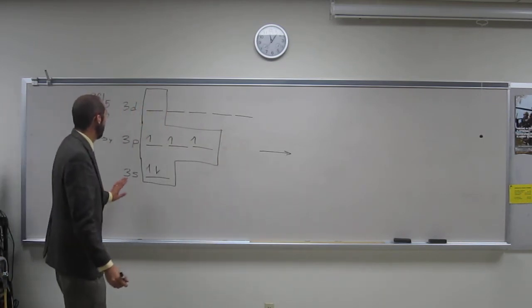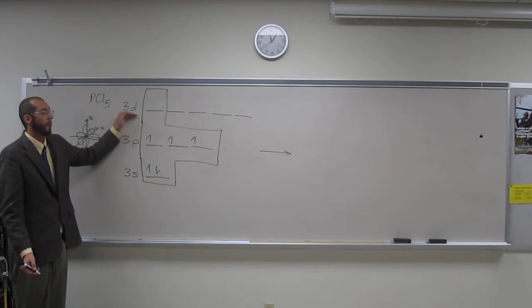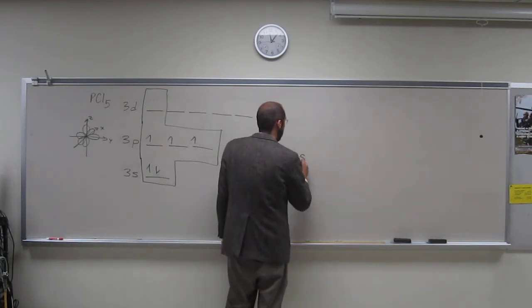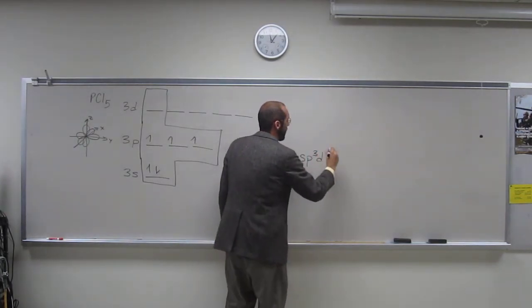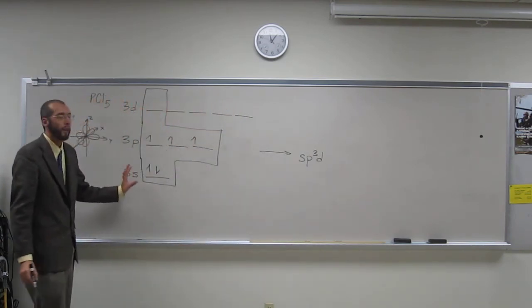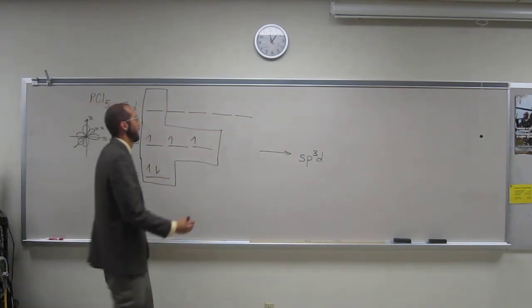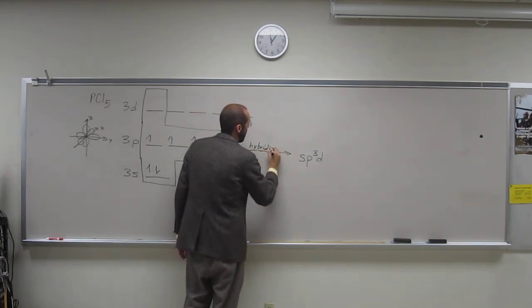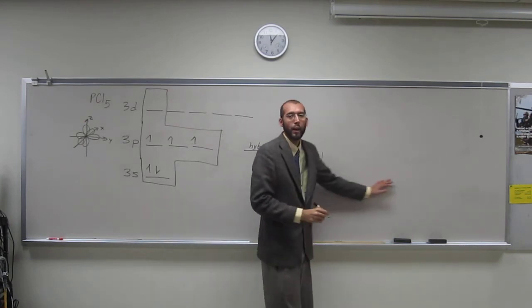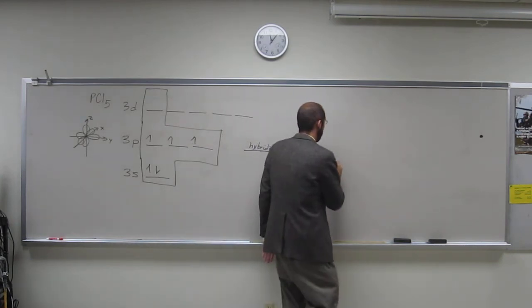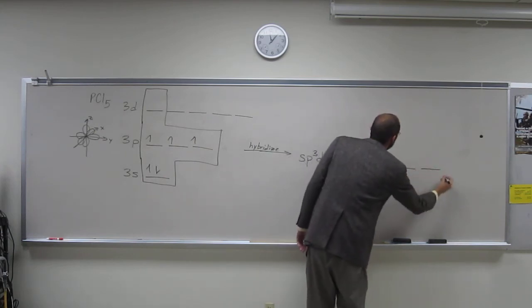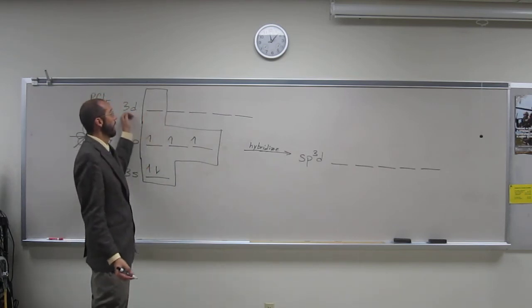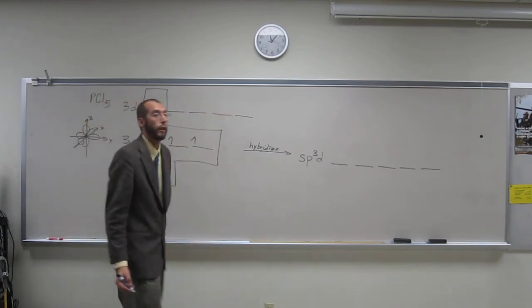So, if we're using 1s, 3p's, and 1d, what is the hybridized orbital still? sp3d. And we put how many into the blender? 5. Right? So, we're going to get how many out? 5. So, 1, 2, 3, 4, 5. And they're all going to be equivalent in energy. And we're still going to have our 4 3d orbitals up there. Up higher.